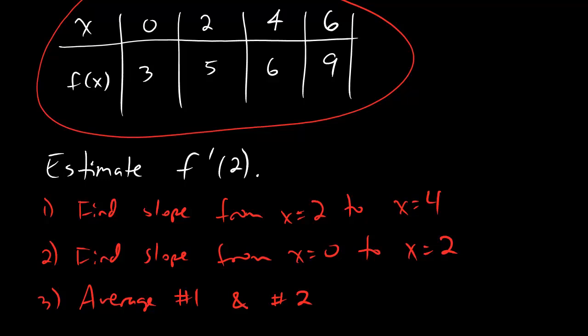So let's actually go ahead and do this for f prime of 2. Step 1 says the slope from x equals 2 to x equals 4. So that's going to be the change in y divided by the change in x. And that's a half. Okay, so let's say this equals 1 half.